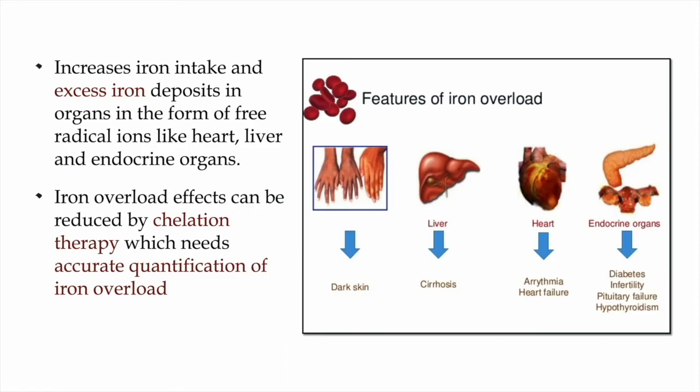Due to regular blood transfusions in these patients, there is excess iron entering the body. This iron converts into the form of free radical iron and deposits into the heart, liver, and other endocrine organs. When excess iron deposits into the liver and heart, it can lead to cirrhosis and heart failure, which is a major cause of mortality in thalassemia patients. When it deposits into the endocrine organs, there is significant morbidity due to diabetes and pituitary failure.